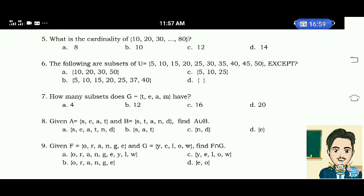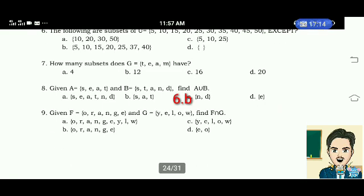A. 10, 20, 30, 50 B. 5, 10, 15, 20, 35, 37, 40 C. 5, 10, 25 D. An empty set. The correct answer is letter B. Number 7. How many subsets does G elements P, E, A, M have?